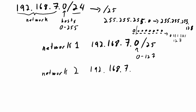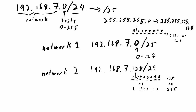Network two is 192.168.7.x where the most significant bit in the last octet is a one. When that bit is one, thinking of it as an 8-bit number, that's 1 followed by seven zeros, which equals 128 — that's the lowest address. The highest is 1 followed by seven ones, which is 255. So the last octet ranges from 128 up to 255, giving network two as 192.168.7.128/25.